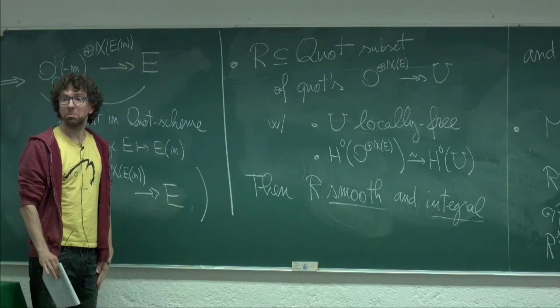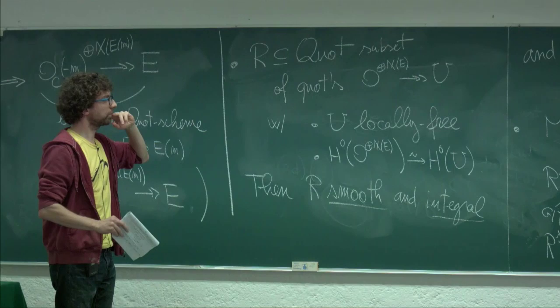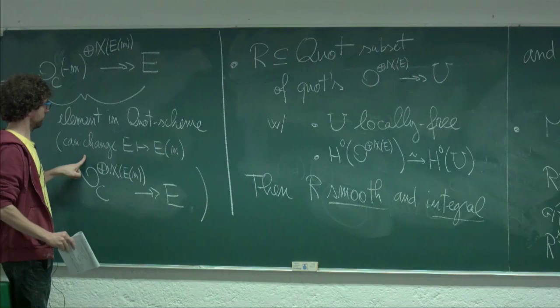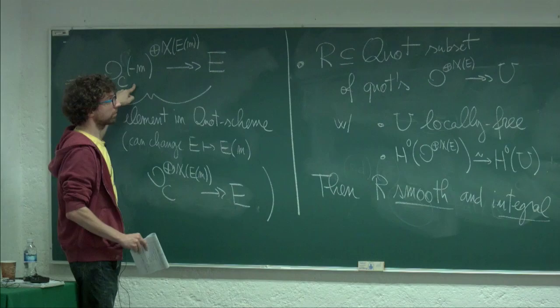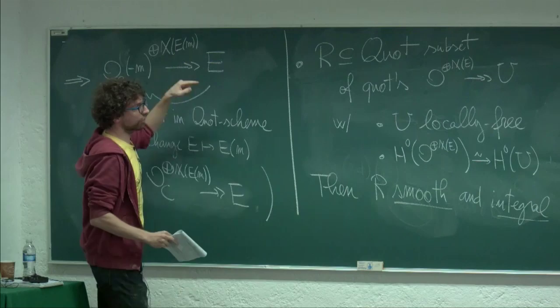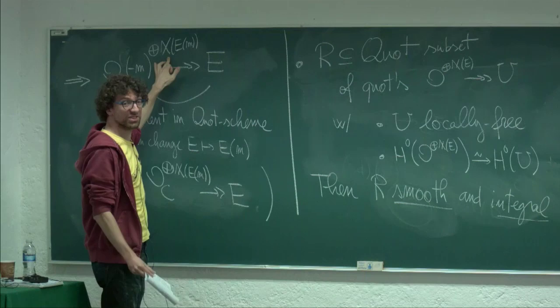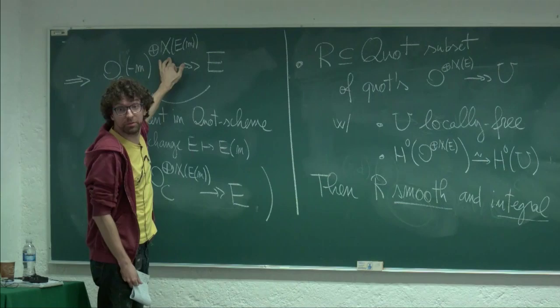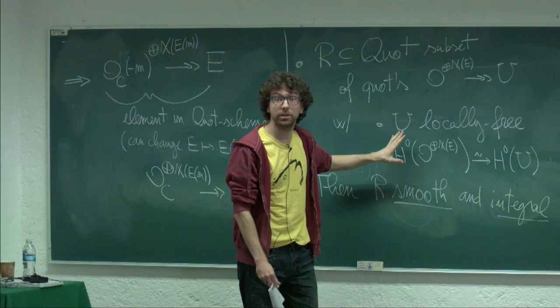That should be where the class of yesterday stopped. A question: why the condition that the global sections equal chi(E)? The second condition comes directly from what was proved: H^1 is going to be zero, so the Euler characteristic equals H^0. A priori without that assumption, you would just have a random quotient, and H^0 could be larger. But for our sheaves — which are semi-stable — it is purely numerical because H^1 is zero.